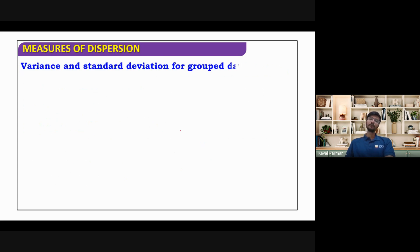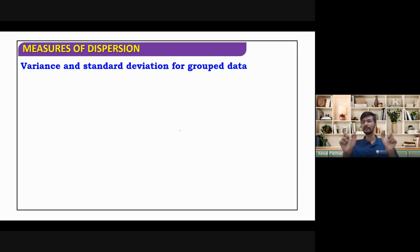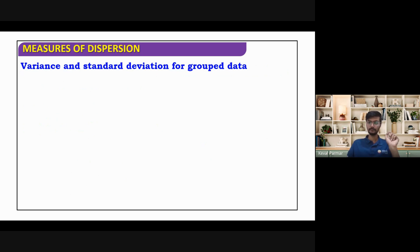Now, variance and standard deviation for grouped data. In grouped data, we have two types: first is discrete, and second is groups — that means classes. Let's look at them.